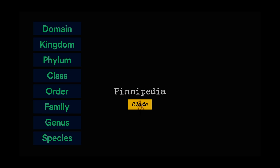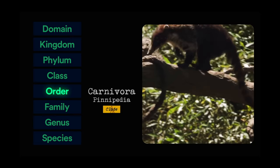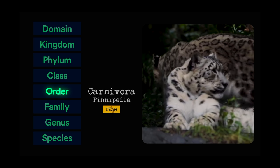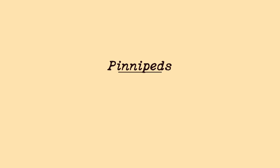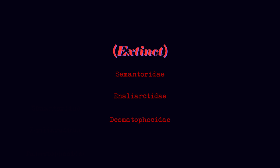The reason Pinnipedia isn't just an order is because the order that encompasses it is Carnivora, which also contains these animals. Most of these are not technically seals, and thus not technically pinnipeds. The three families that make up Pinnipedia are Odobenidae, Otariidae, and Phocidae. There are three more families, but they're all dead so you won't run into them.